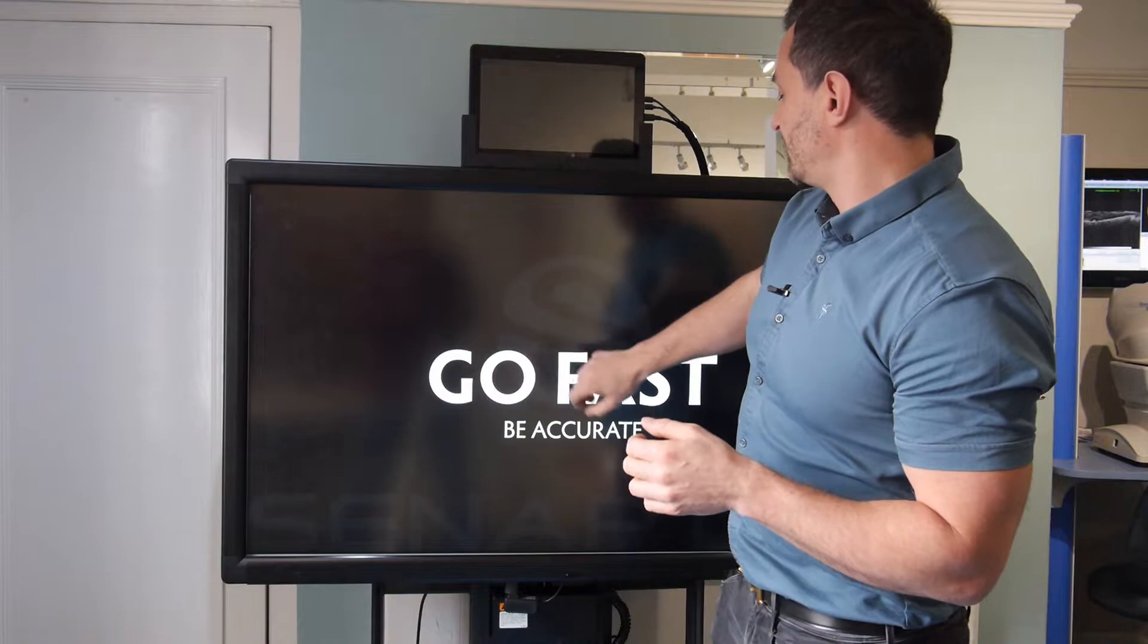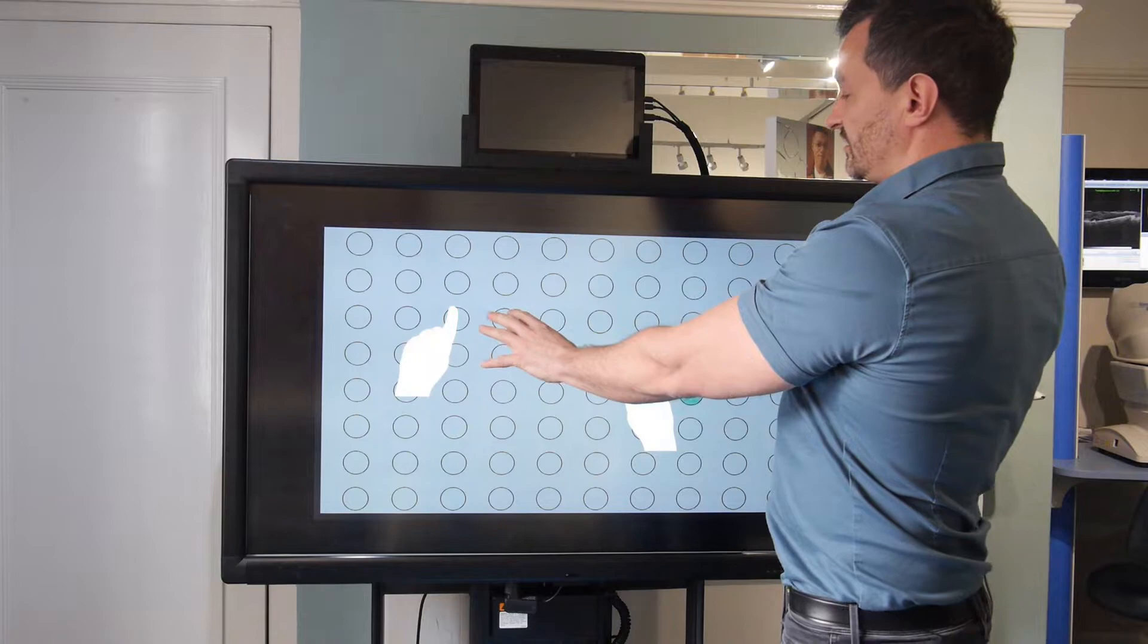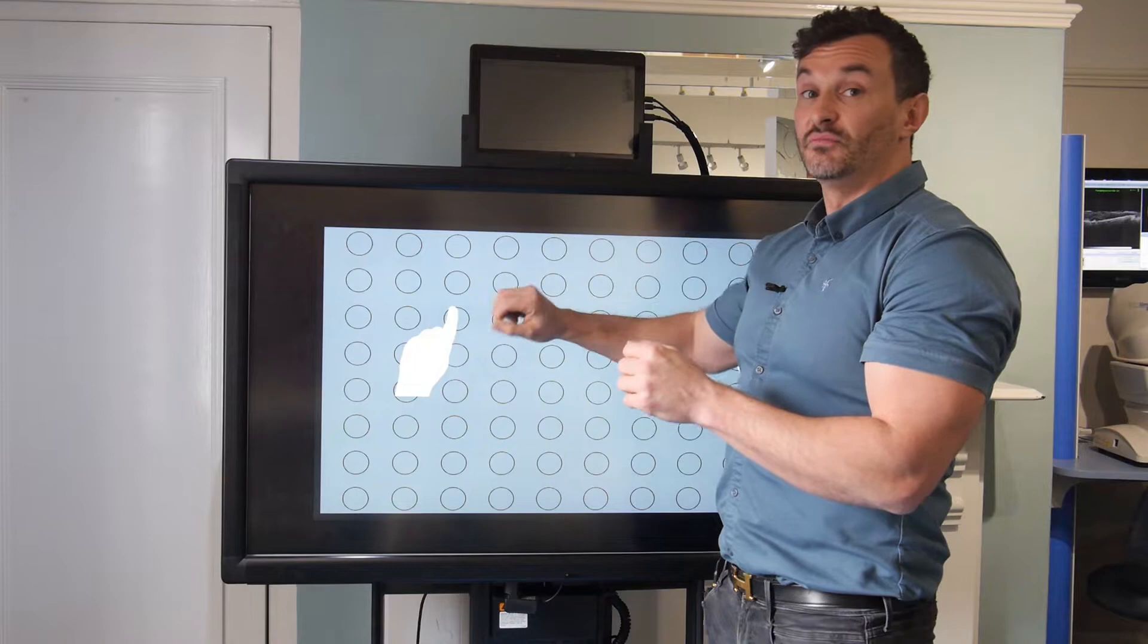So this test is all about being fast and accurate. This unit is going to be illuminated like this. We're going to have a green target that's going to turn up and we have to make a swift, rapid, accurate movement and turn that light off. This is all about being fast and accurate.